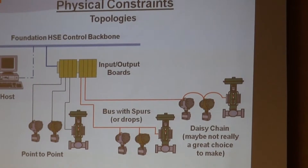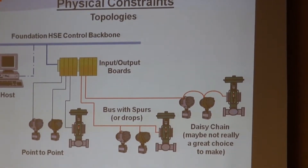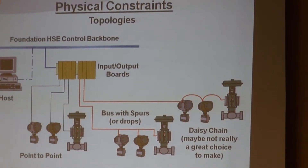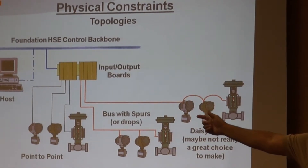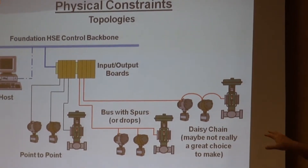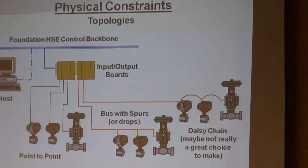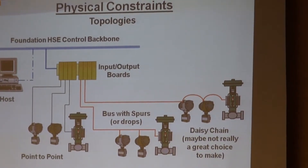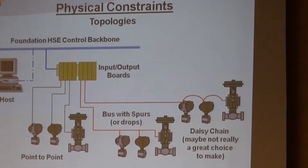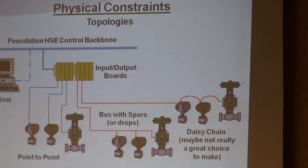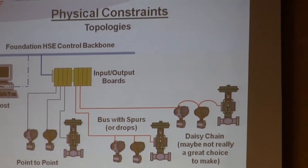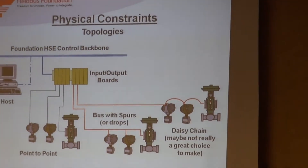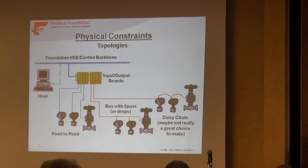Bus with spurs is another variation where you run a trunk out to the field and do drops - here's a device, here's another, here's another. A variation of that would be what's called trunk-in, trunk-out. You can have multiple device couplers on that same trunk. Just make sure that your terminator is on the very last one. So you can have lots of variations of this bus with spurs.